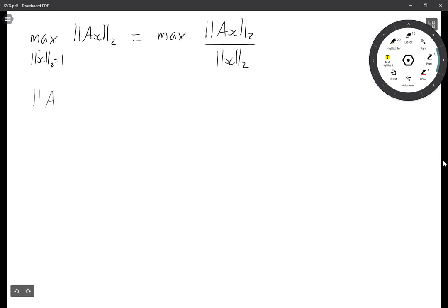So we know that the norm of Ax squared is just x transposed A transposed Ax and if we write A in its singular value decomposition form as UΣV^T then A transposed A is going to be VΣ²V^T.